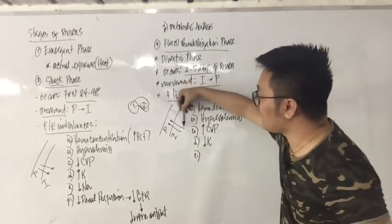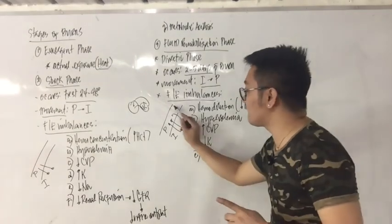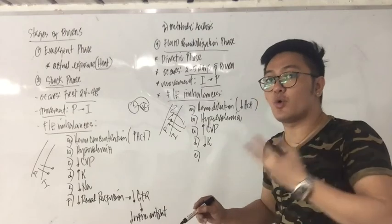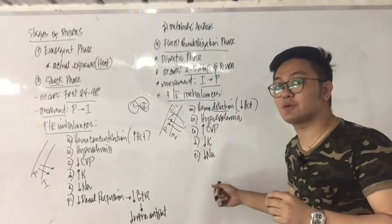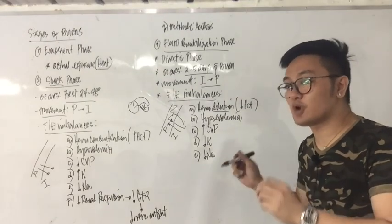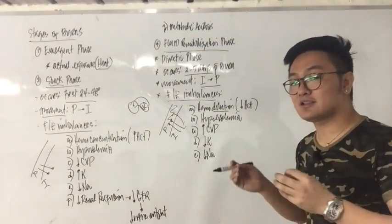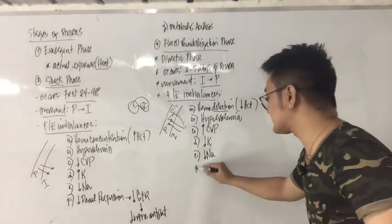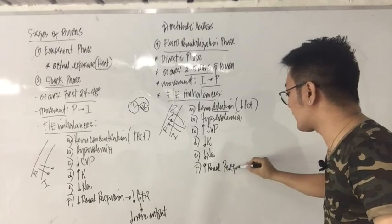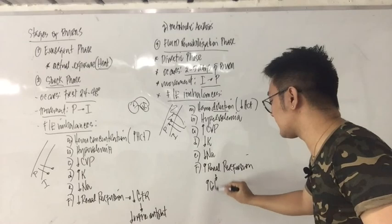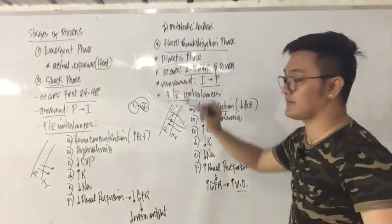Continued: increased blood volume raises renal perfusion, increasing the glomerular filtration rate and increasing urinary output — that is why this is called the diuretic phase, because the patient urinates frequently.